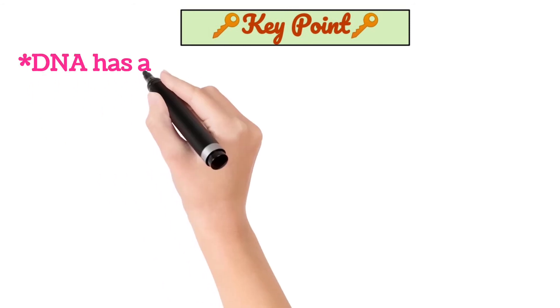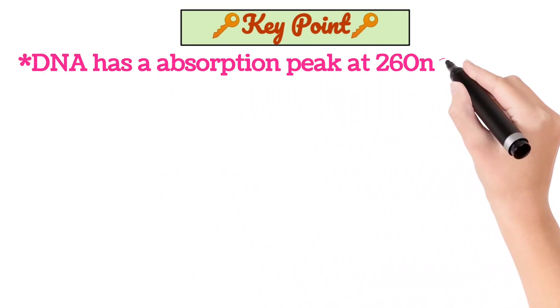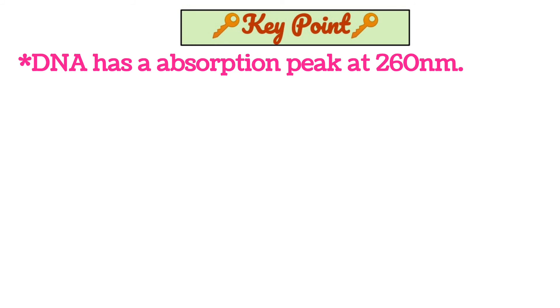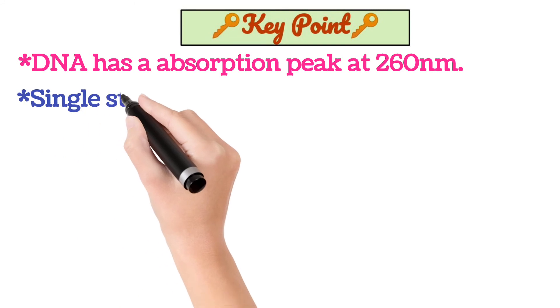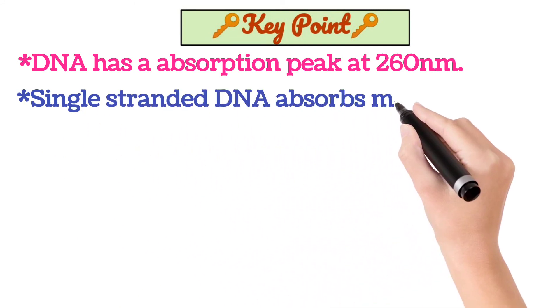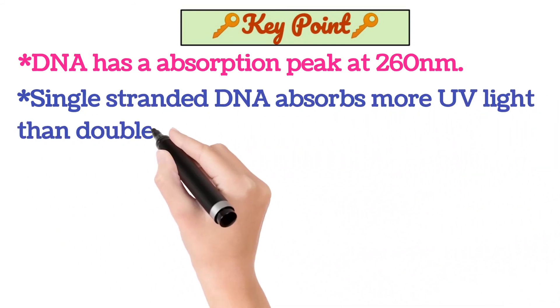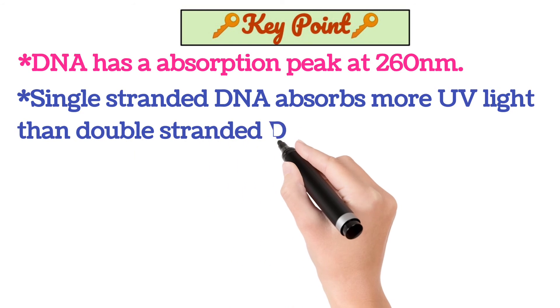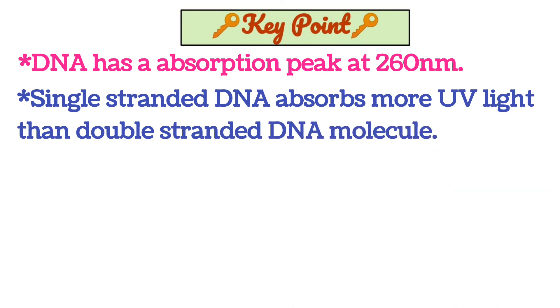To understand the detailed concept of Tm, remember some key points. First, DNA shows a UV absorption peak at 260 nanometers. Second, single-stranded DNA absorbs more UV light than double-stranded DNA — this is a very important key point.